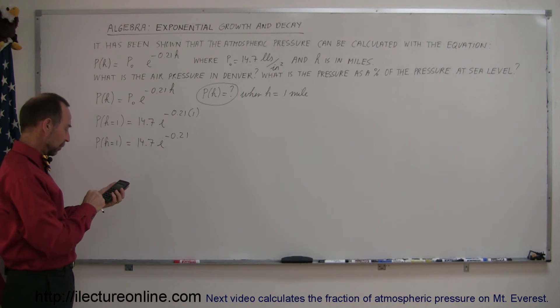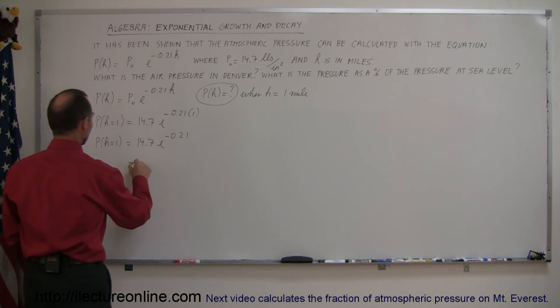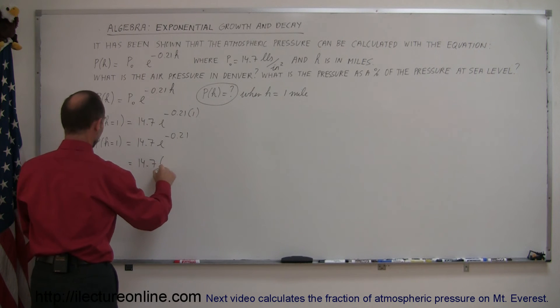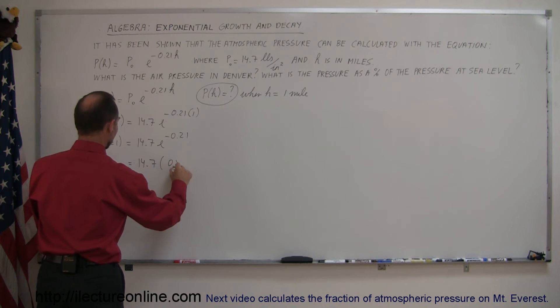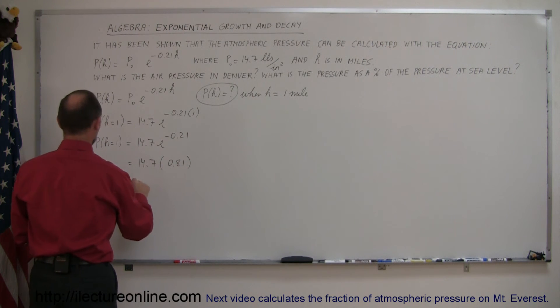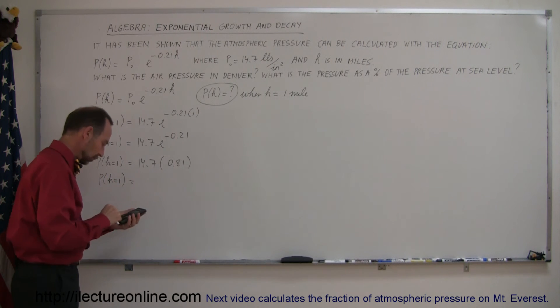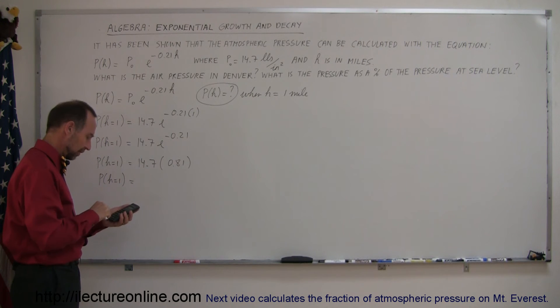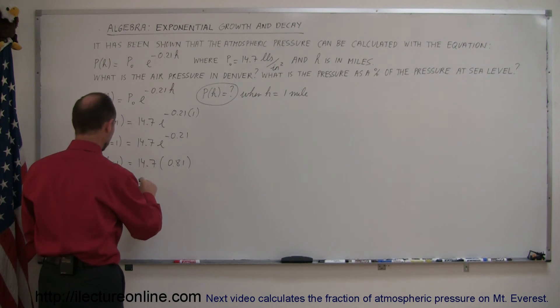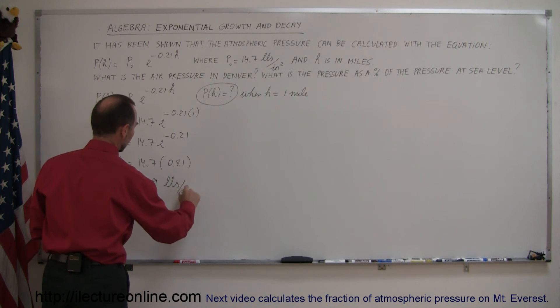So we have 0.21 negative, raise that to the exponent e. This is equal to 14.7 times 0.81, which is... so the pressure when h is equal to 1 is 14.7 times 0.81, equals 11.9, and of course that's in pounds per square inch.